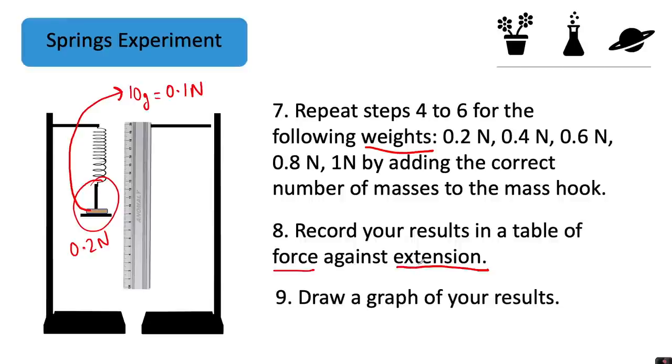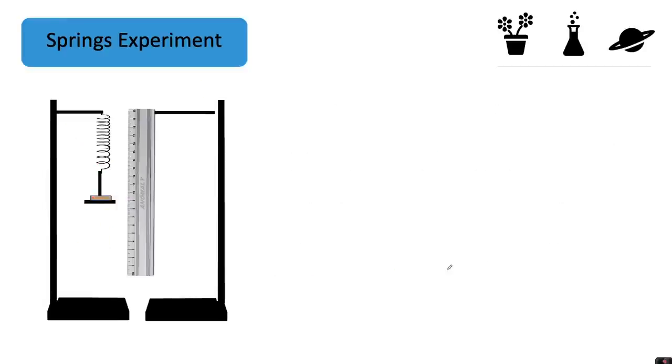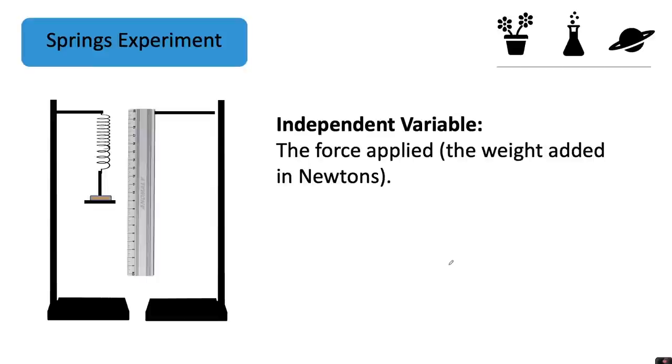Then you're going to draw a graph of your results. So the variables for this experiment: the independent variable is the thing that we are changing. We are changing the force applied and we're doing this by changing the weight that we're adding in Newtons. So we're changing the weight we are applying to the end of the spring.